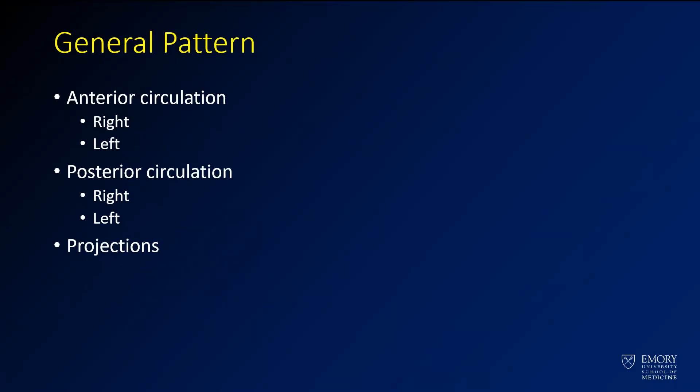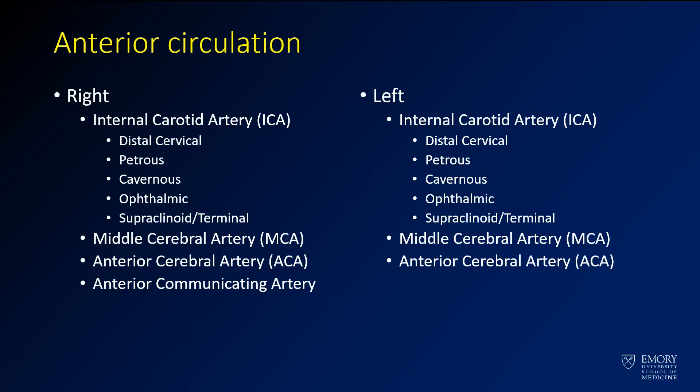In general, when I approach an MRA, I start from the anterior circulation first, moving from right to left, then I move to the posterior circulation moving from right to left, and then I take a look at some of the three-dimensional projectional data. When I work through the anterior circulation, I work from right to left. I'll start by looking at the internal carotid artery and its branches — the middle cerebral artery or MCA, and the anterior cerebral artery or ACA — and then I'll look for the anterior communicating artery. Similarly, I'll move to the left and follow the same pattern.